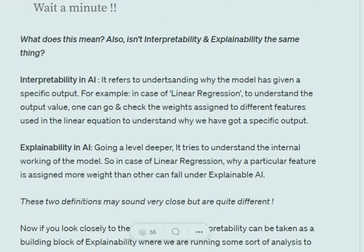As you can see on the screen, interpretability in AI refers to understanding why a particular model that we have trained is giving a specific output. For example, in case of linear regression, if you wish to understand why you've got a particular output value as a result, you can go back and check the weights that are assigned to different features used in the linear equation to understand why we have got a specific output. If the weight of a particular feature X is greater, that is why we are getting this value, and if the weight of some feature Y is lower, that is why we are getting this value.